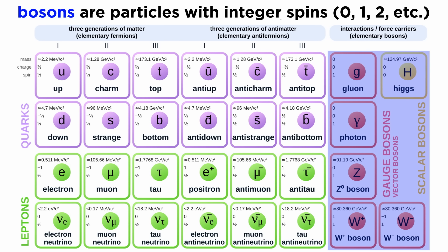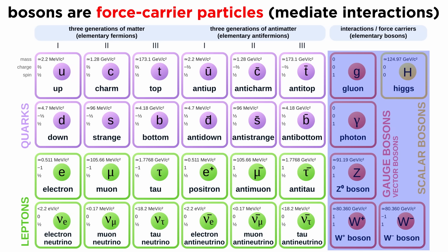The final group of particles in the standard model are bosons, which have integer spins of zero, one, two, and so forth. These are the particles that mediate interactions between all the others in the model. This is why bosons are sometimes called force-carrier particles.